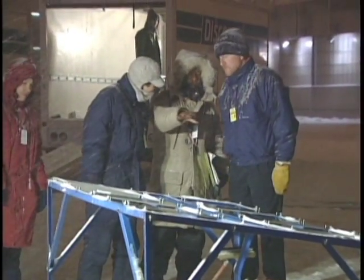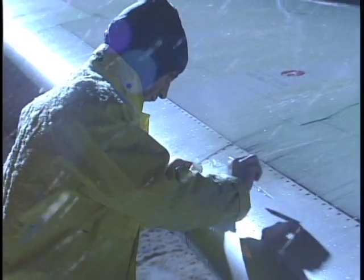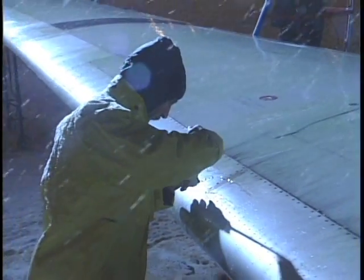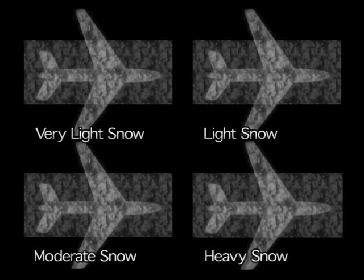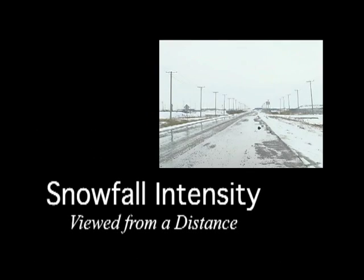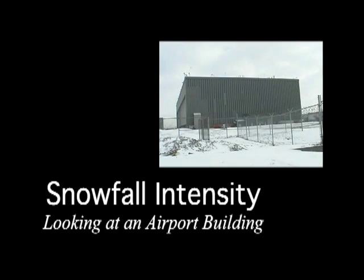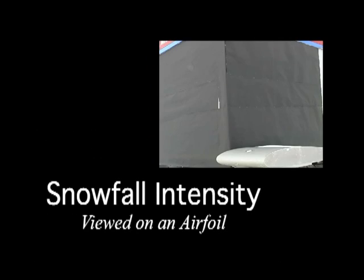Pilots use visibility tables provided by regulators such as Transport Canada and the Federal Aviation Administration to determine snowfall intensity. There are four snowfall intensity categories: very light, light, moderate, and heavy. This video illustrates the four snowfall intensity categories from three different perspectives.